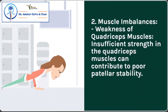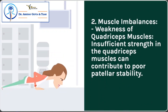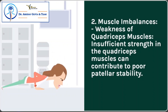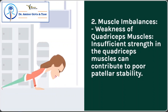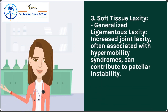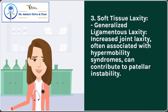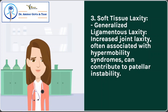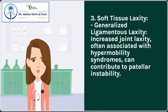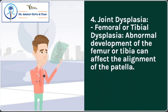2. Muscle Imbalances: Weakness of quadriceps muscles – insufficient strength in the quadriceps can contribute to poor patellar stability. Imbalance in muscle pull – an imbalance between the inner and outer quadriceps muscles may influence patellar tracking. 3. Soft Tissue Laxity: Generalized ligamentous laxity and increased joint laxity, often associated with hypermobility syndromes, can contribute to patellar instability.